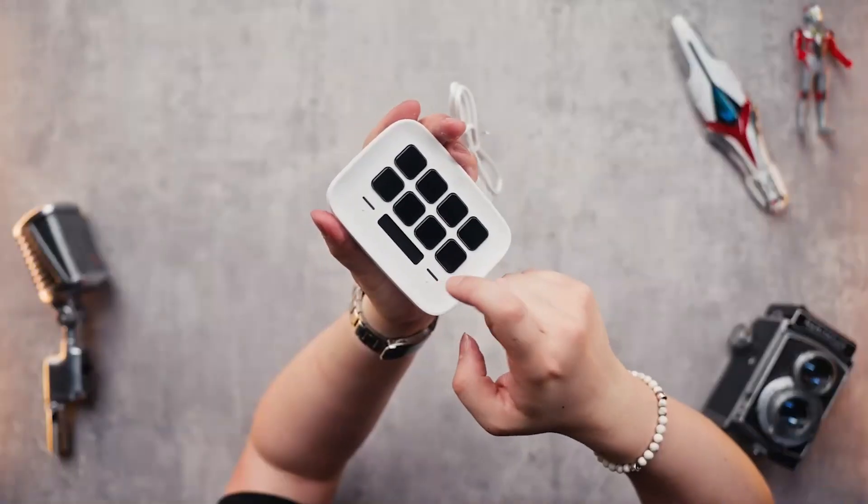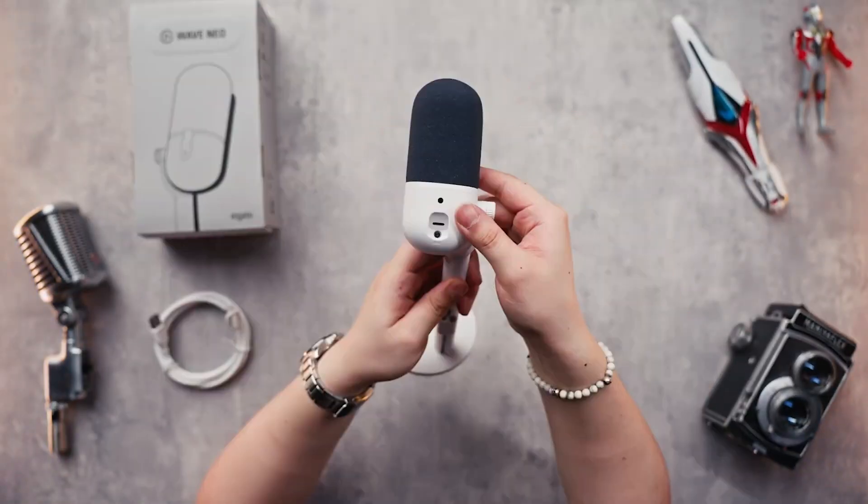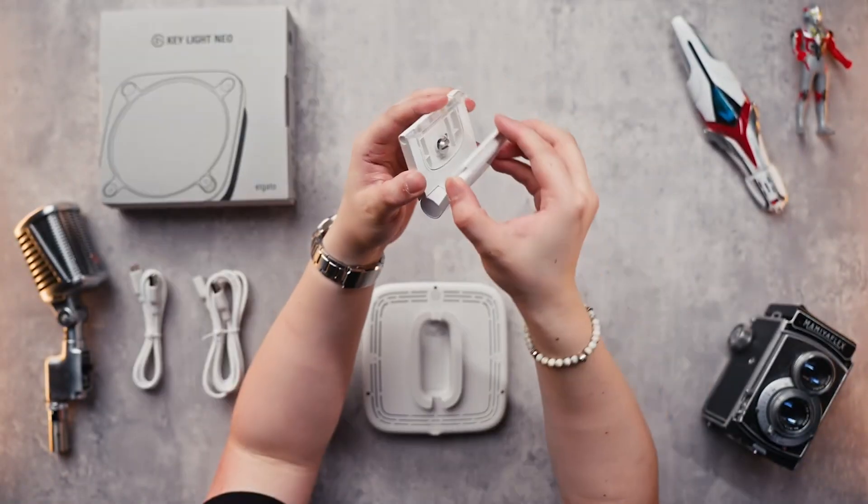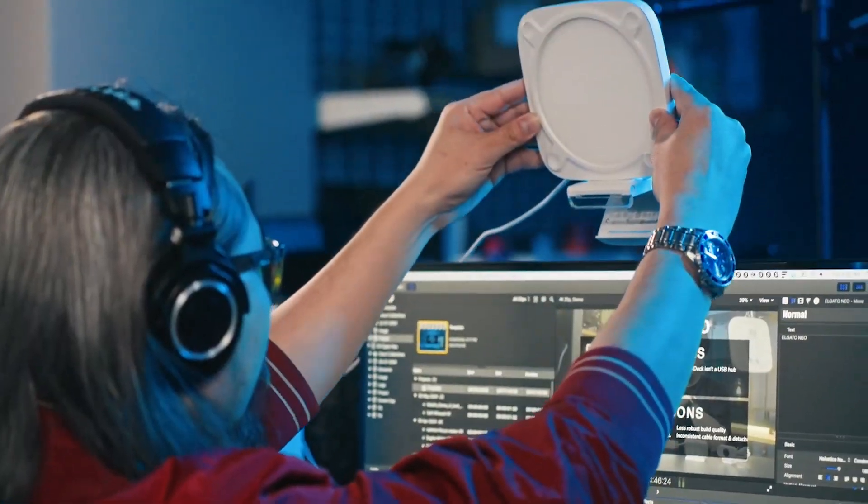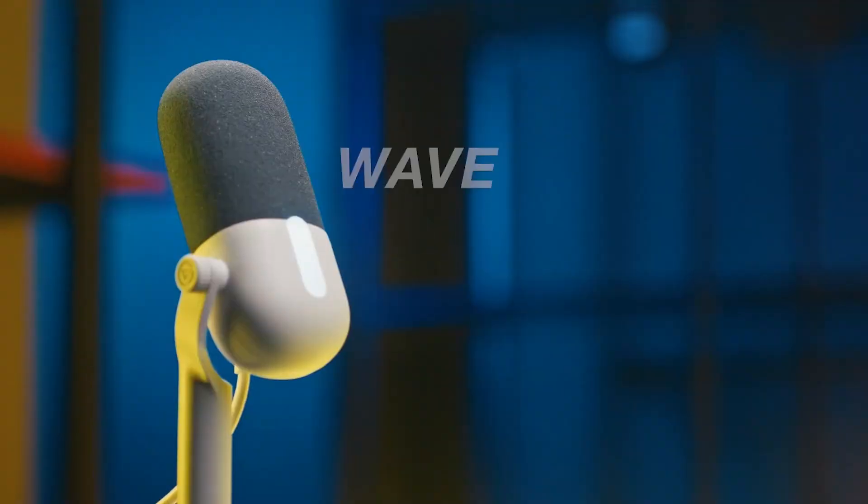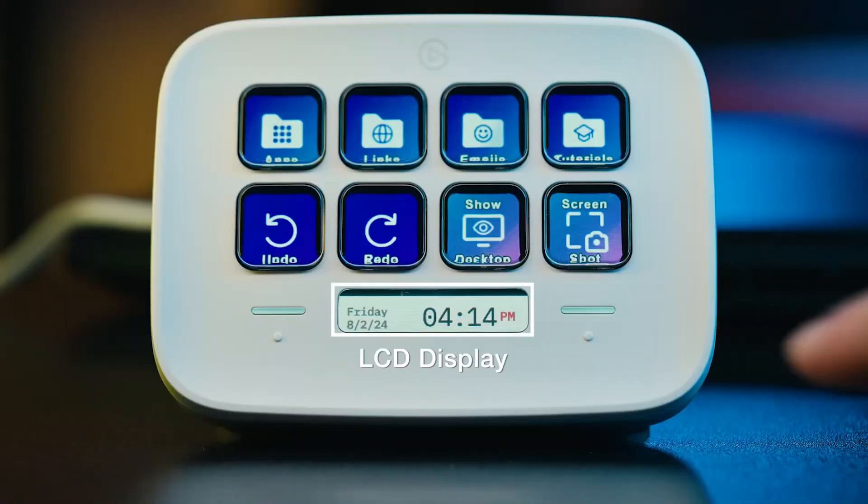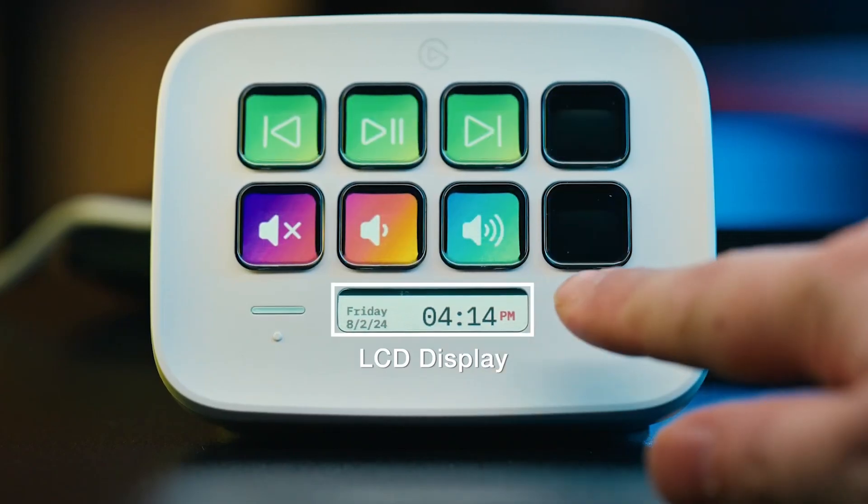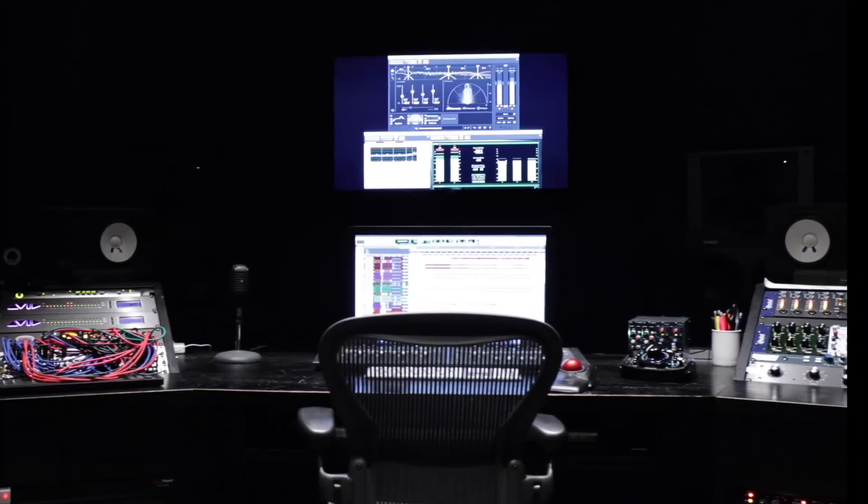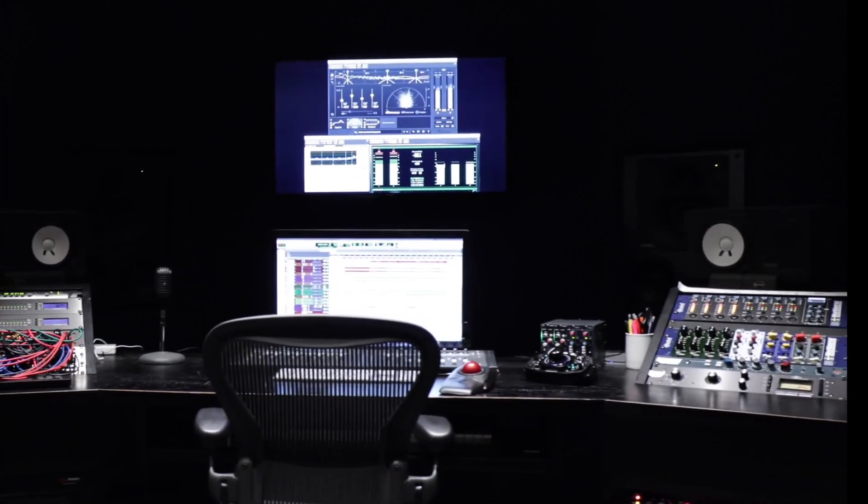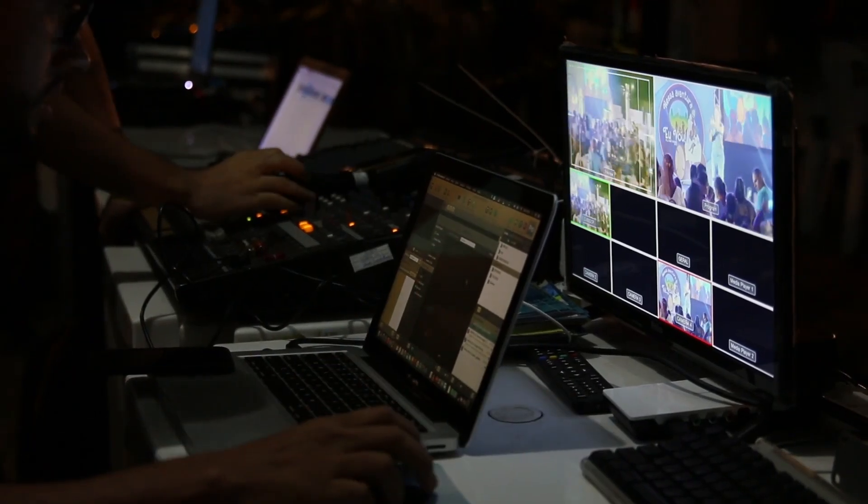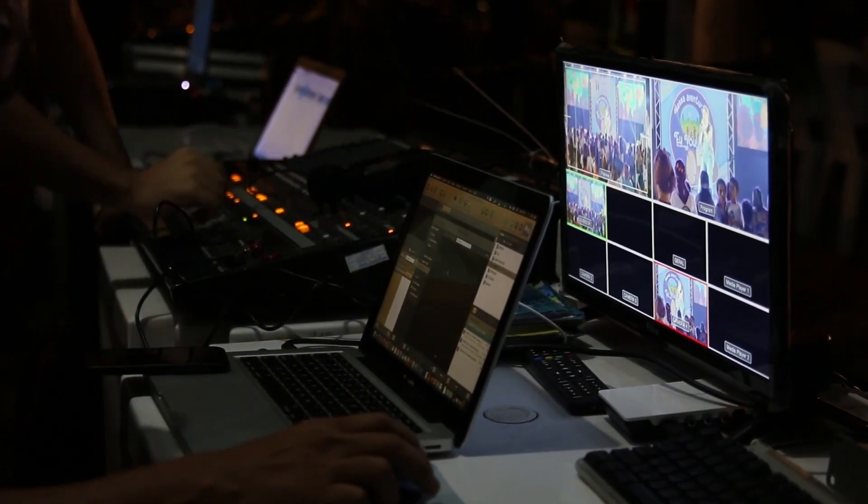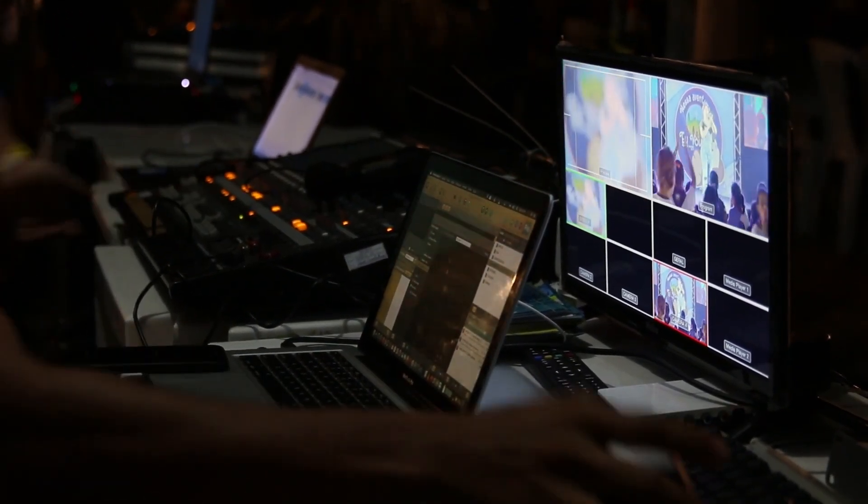One of the key strengths of the Stream Deck Neo is its ability to integrate with other Elgato products and third-party devices. Whether you're using Elgato's key light, wave microphone, or other gear, the Neo can control them all from a single interface. This kind of integration not only simplifies your setup, but also enhances your workflow, allowing you to focus more on your content and less on the technical aspects. I believe this seamless integration makes the Neo an invaluable tool for streamers looking to streamline their setup.